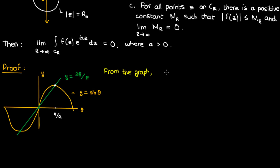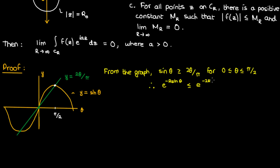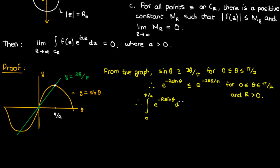From this graph you can see that sin θ is actually greater than or equal to 2θ/π for θ between 0 and π/2. This is important because it means that the exponential of negative R·sin θ is less than or equal to the exponential of negative R·2θ/π, where capital R is a positive constant — which it is, because it's the radius of a semicircle. And since that inequality holds, the integrals of these quantities from 0 to π/2 follow the same inequality order.